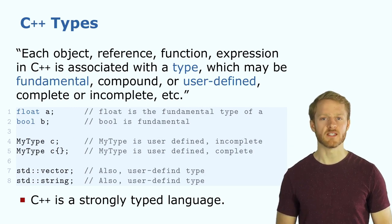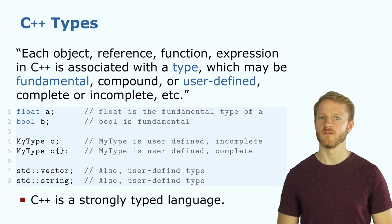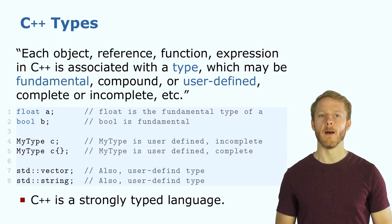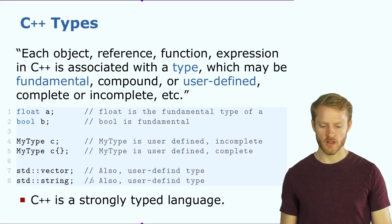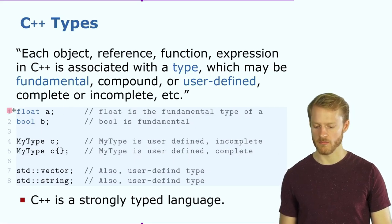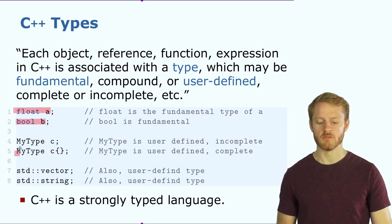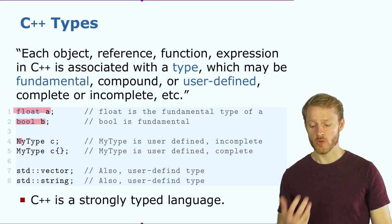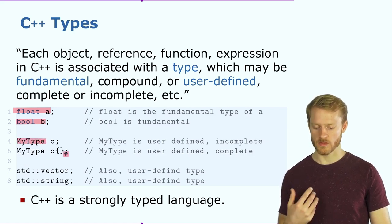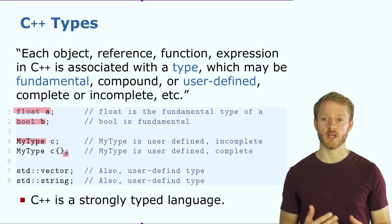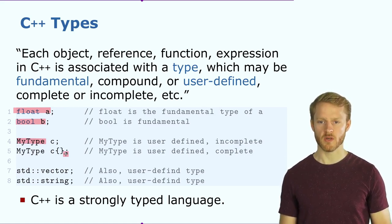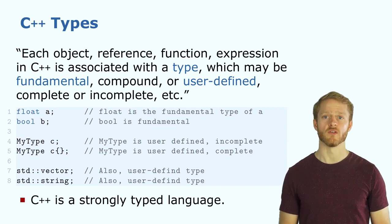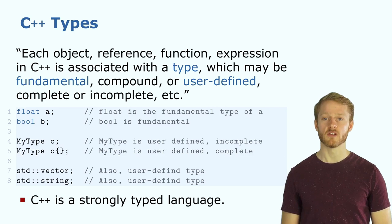We have different types in C++ for everything — for objects, references, and functions. They can be fundamental, compound, or user-defined. Examples include float, which is a fundamental type, booleans, and various user-defined types. It's important to know that we need a type for all of these — for functions, variables, and expressions — because C++ is a strongly typed language.